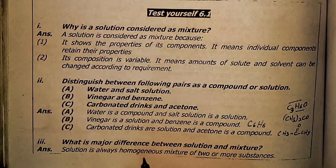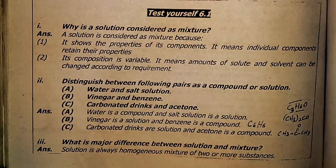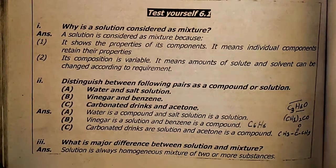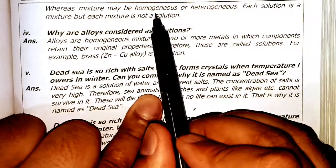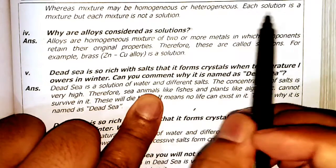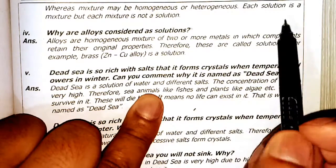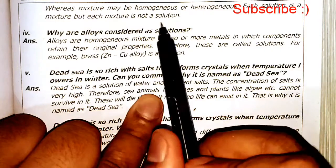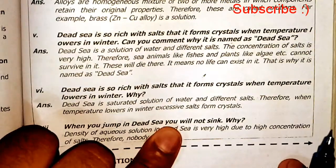The third question asks: what is the major difference between solution and mixture? A solution is always a homogeneous mixture of two or more substances. A mixture can be homogeneous or heterogeneous. Each solution is a mixture, but not every mixture is a solution.